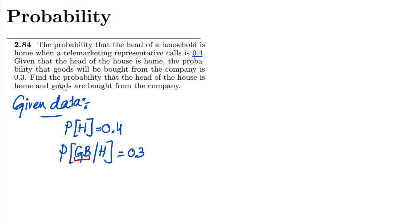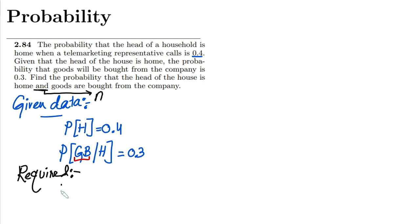Now, in order to find the probability that the head of the house is home and goods are bought from the company, we can see that the word 'and' has come up. As I have previously told you, 'and' is represented by the intersection sign. So I have to find out the probability that the head of a household is home and goods are bought.